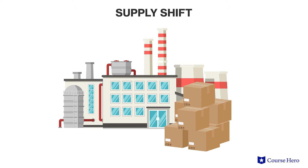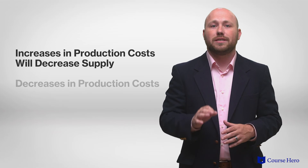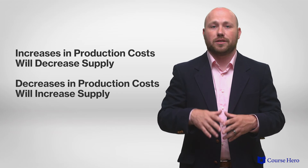The toughest supply shifter is the impact of input costs on the production process. If the cost of producing items increases, firms will decrease the supply of that product. Often we think that if costs go up, the firm needs to sell more to make up for that. But consider what a firm would want to do if production costs decrease — if it's cheaper to make the product and prices are the same, the firm doesn't want to decrease the amount they provide to the market. Increases in production costs will decrease supply, while decreases in production costs will increase supply.